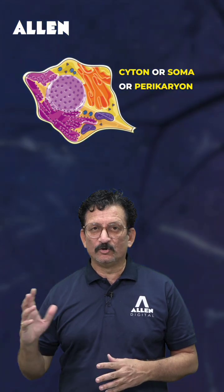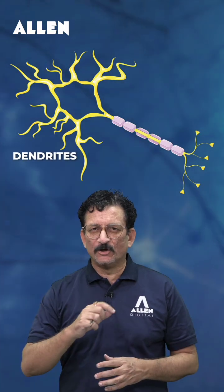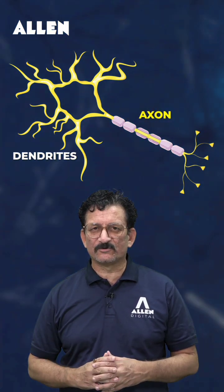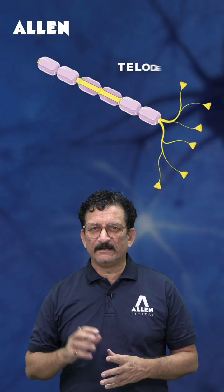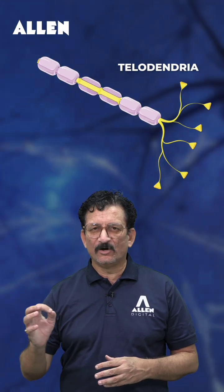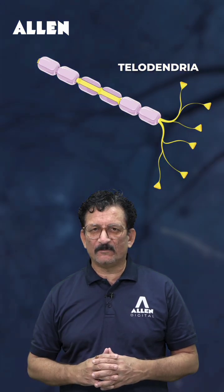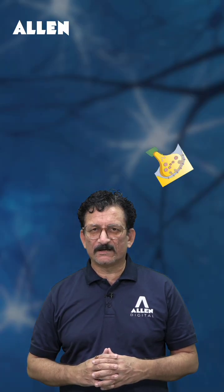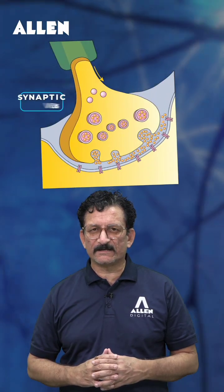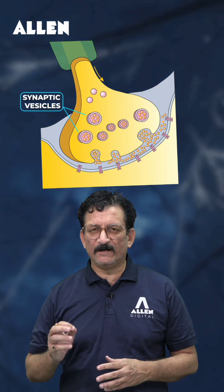The second part consists of cell processes. Smaller cell processes are called dendrites, and the longer cell process is called the axon. The last part of the axon is called telodendria or synaptic knob.